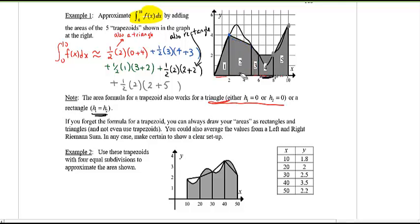If you do forget the formula trapezoid, don't worry about it. You can always draw your areas as rectangles and triangles, right? So let me show you what I mean by that. If I take trapezoid number two, I could just have a nice little triangle here, right, in black. And I could also add the rectangle here in blue. That triangle plus the rectangle also equals to the area of the trapezoid.